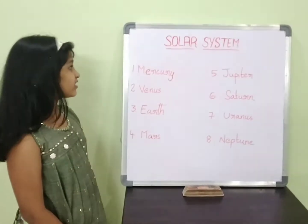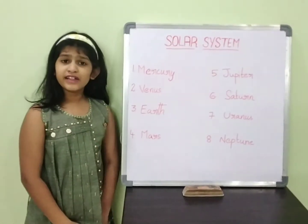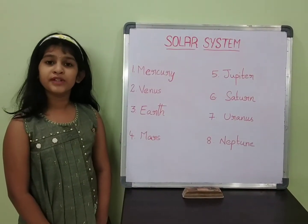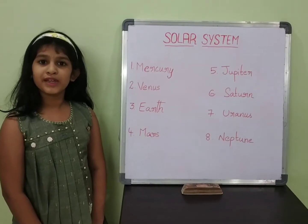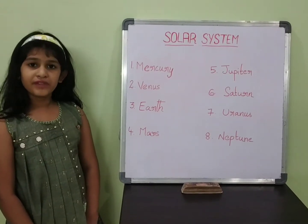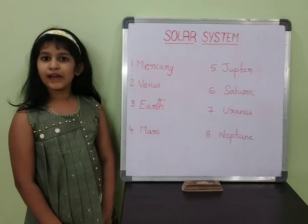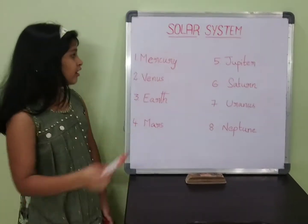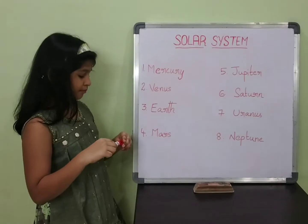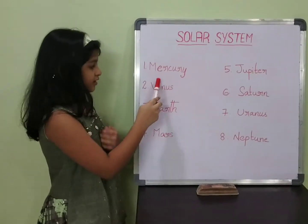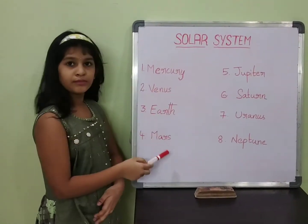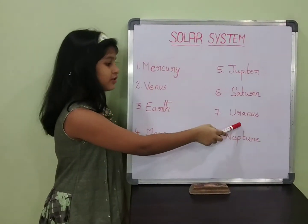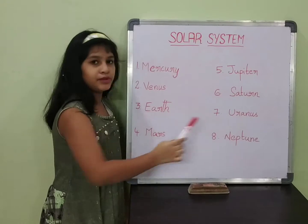Planets are big ball-shaped objects found in space. There are eight planets. They are Mercury, Venus, Earth, Mars, Jupiter, Saturn, Uranus, and Neptune.